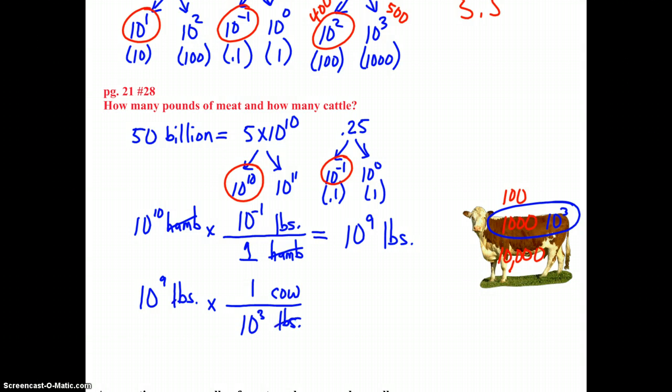We go over here and substitute 10 to the third. Pounds cancels. We're dividing, so we're subtracting powers of 10 exponents. So 10 to the sixth cows, 10 to the sixth head of cattle were used to supply this meat.